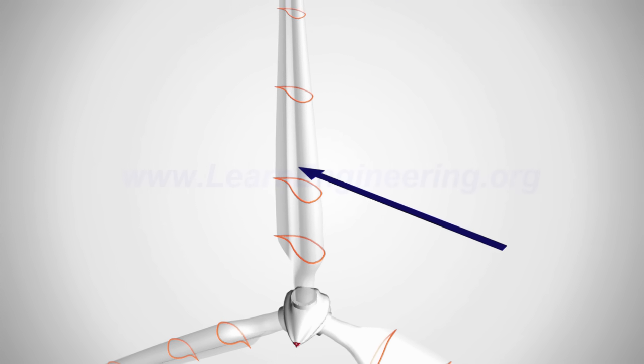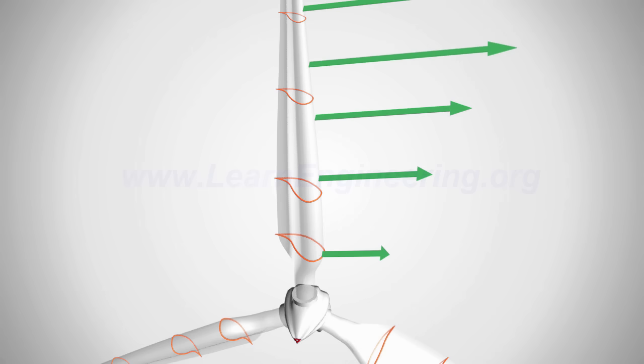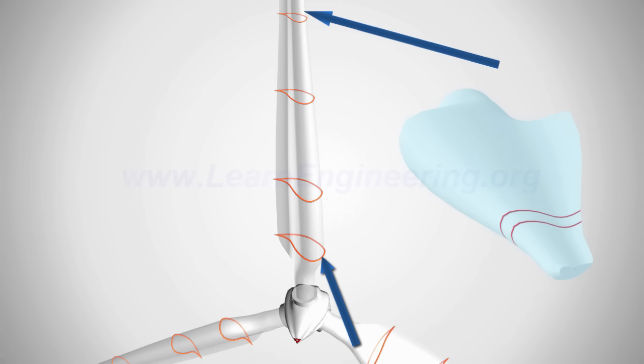As the blade velocity increases to the tip, the relative wind speed becomes more inclined towards the tip. This means that a continuous twist is given to the blade from the root to tip.